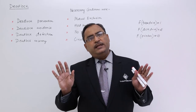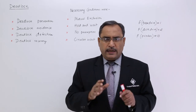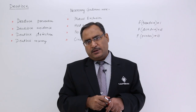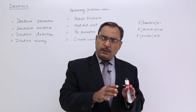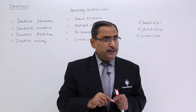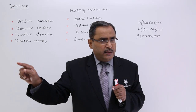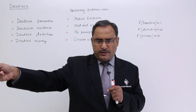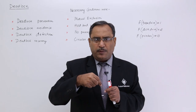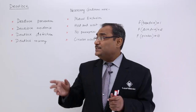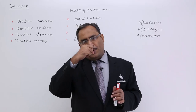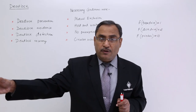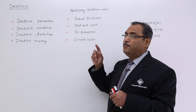Next one is no preemption. The condition is: I shall not release any resource prior to completion. Now, suppose a process is requesting a particular resource. The operating system will first check whether the resource is available in the resource pool or not. If it is available, it will be allocated. But if it is not available, it will check whether there is any other process waiting for other resources and occupying that very resource which was demanded. If so, then it will preempt that resource from the waiting process and give it to the requesting process so that the process can get execution. This is known as the no preemption solution.